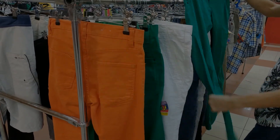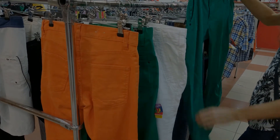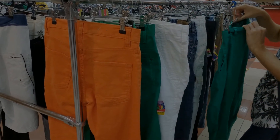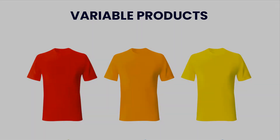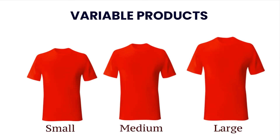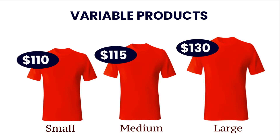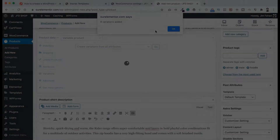What is a variable product? A variable product means different variations of a single product. Let's say you sell t-shirts — there might be different colors for the same t-shirt and the price could be different for different colors. For the same t-shirt, there might be different sizes and prices could be different for different sizes as well. These sizes and colors are the variations in this case.